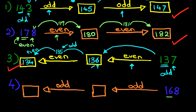Now we can ignore the first two digits — the last one is an 8. Now is 8 an odd number or an even number? You should know this by now. Count the even numbers: 0, 2, 4, 6, 8. Eight is an even number, therefore 168 is also an even number.